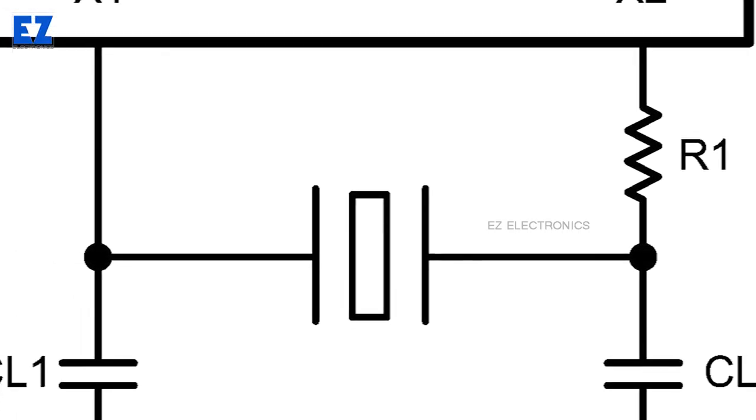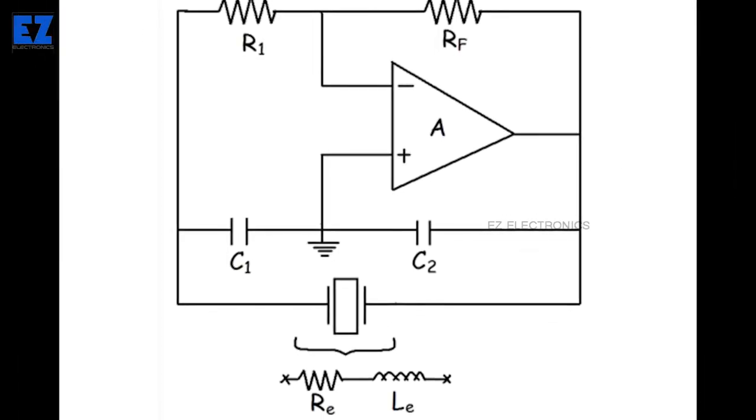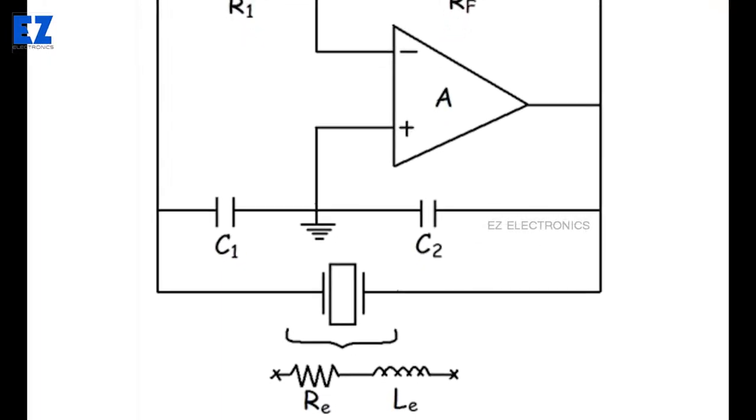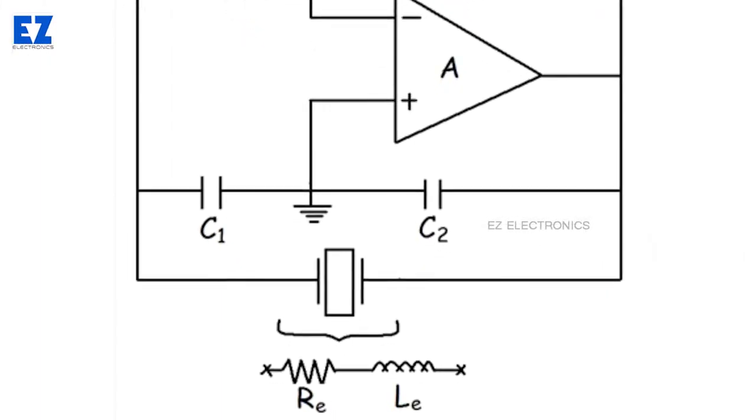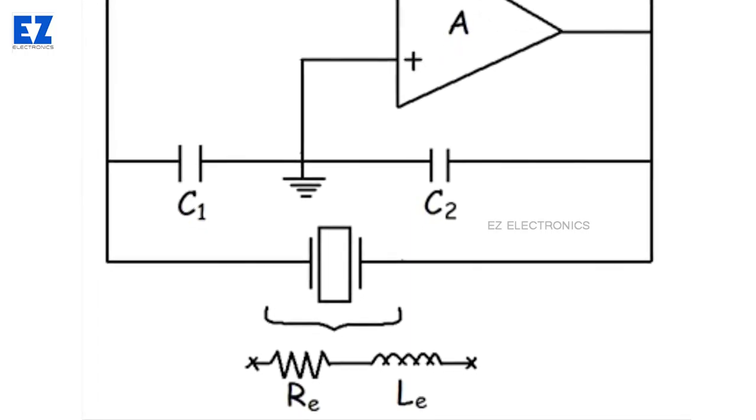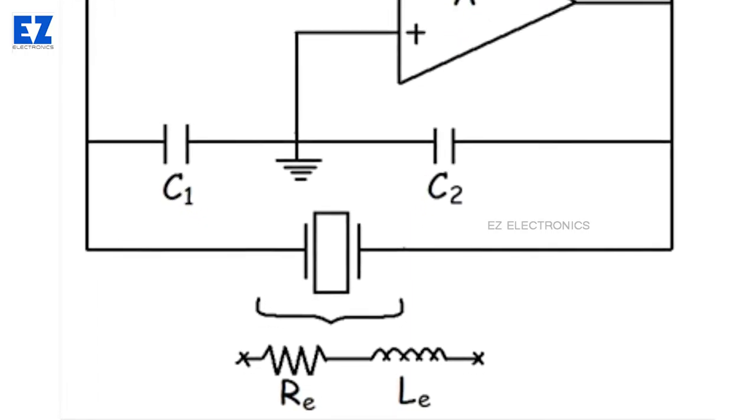This is the schematic representation of the crystal oscillator. Electrically, the crystals can be thought of as a series RLC circuit with a parallel capacitor. Usually parallel capacitors are added to these crystals to decrease the resonant frequency.